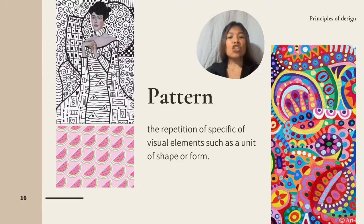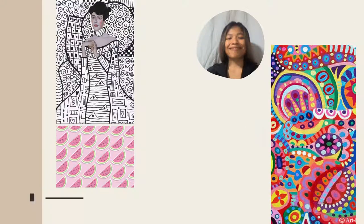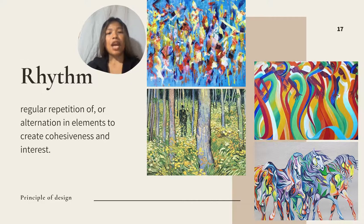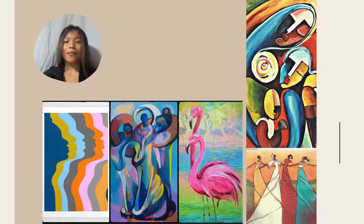Fifth is Pattern. The repetition of specific visual elements such as a unit of shape or form. A method used to organize surfaces in a consistent, regular manner. Sixth is Rhythm. Regular repetition or alternation of elements to create cohesiveness and interest.